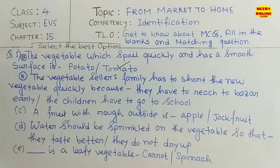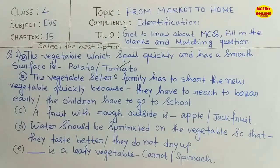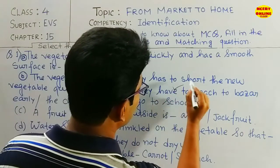The vegetable seller's family has to sort the new vegetables quickly. They have to reach the bazaar early, or the children have to go to school. So the correct answer is: they have to reach the bazaar early.